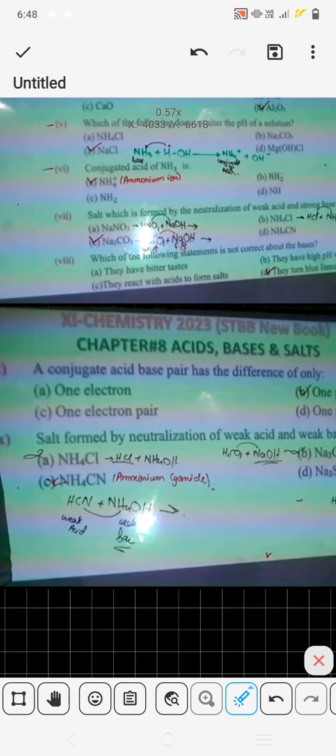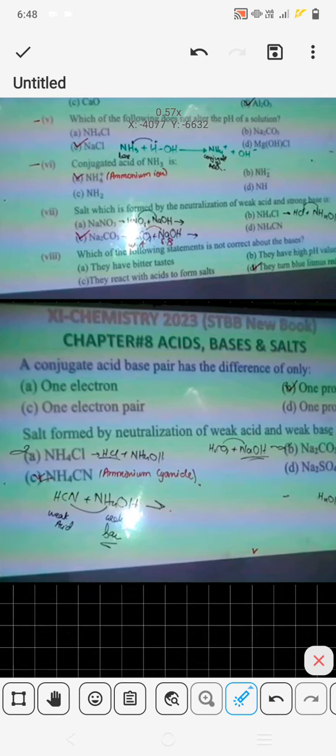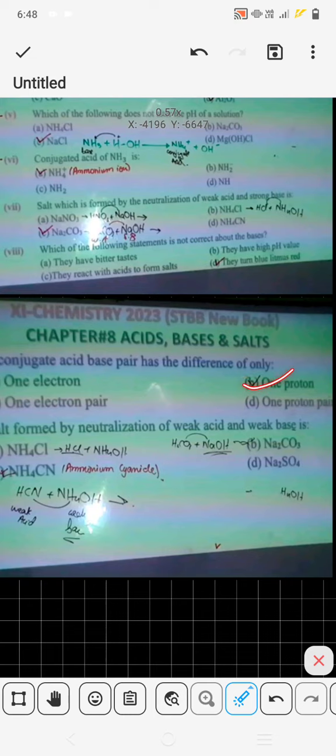The conjugated acid-base pair has a difference of only one proton, not one electron pair, but one proton.